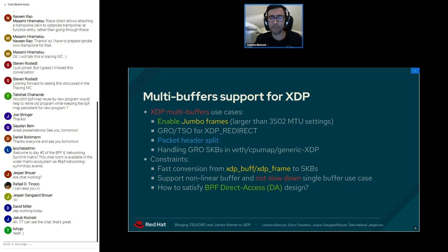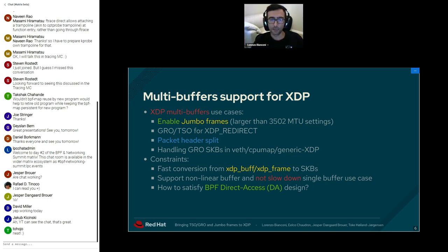The main use cases for XDP multi-buffer are: enabling jumbo frames (frames with size bigger than a single page); enabling GRO/TSO while performing XDP redirect, so the capability to map non-linear frames on the NIC side; packet header split — the capability to have packet headers and payload in two different buffers, which can be used for TCP zero-copy; and handling GRO SKBs received in the veth or in the generic XDP.